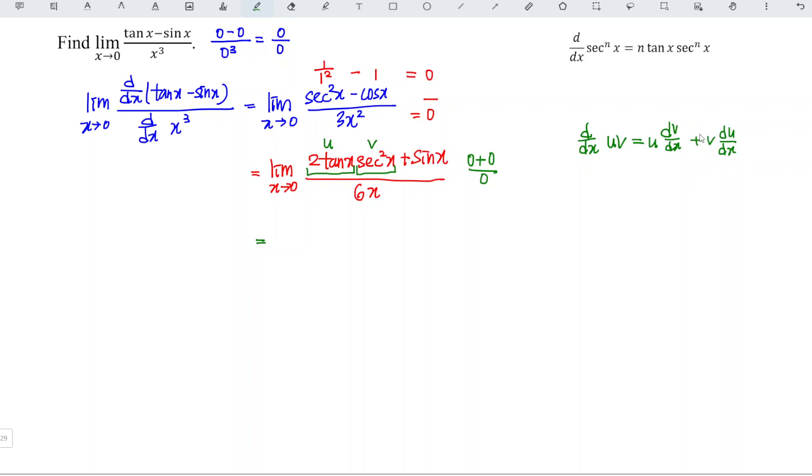We just have to apply this formula. We have u, which is 2tan(x), times dv/dx. Following the formula here, we have 2tan(x)sec²(x). Since this is power 2, n is 2 for this case.